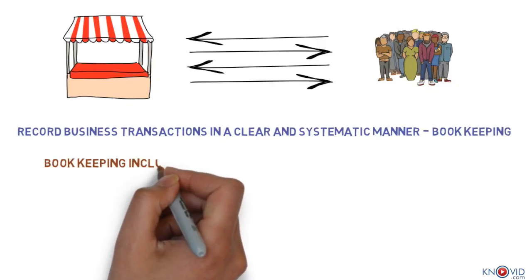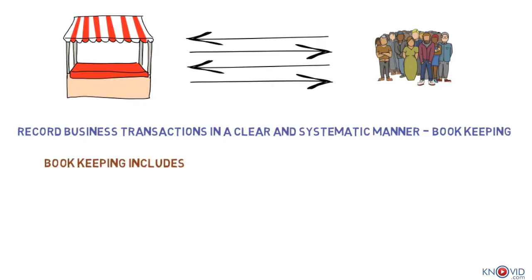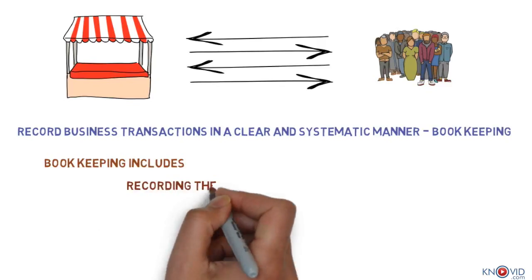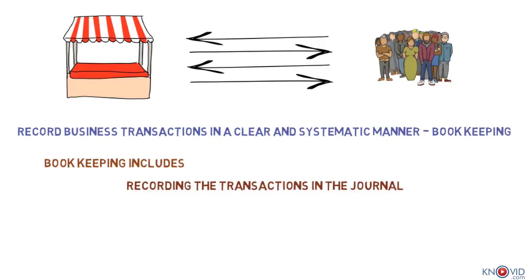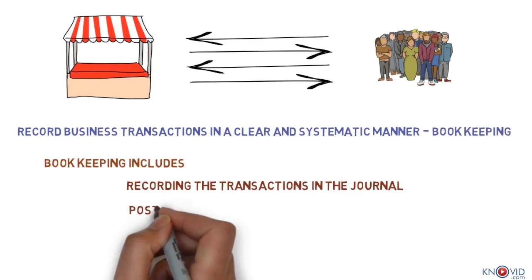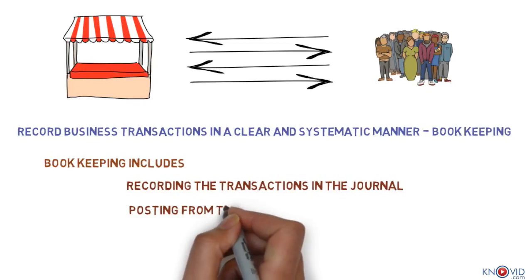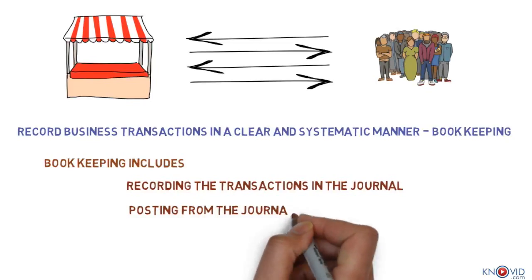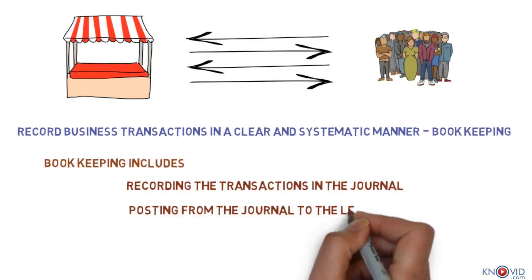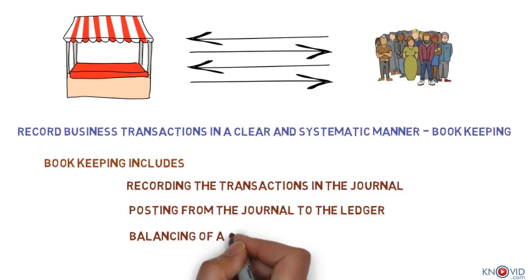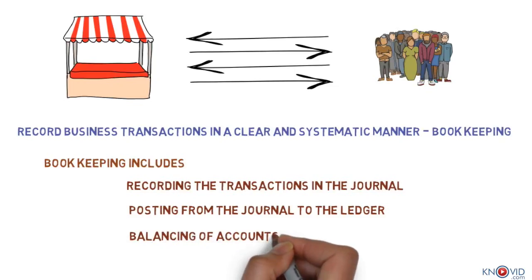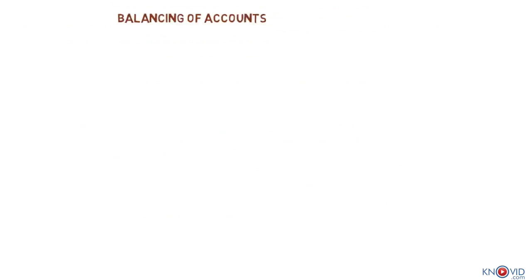Bookkeeping includes: 1. Recording the transactions in the journal. 2. Posting from the journal to the ledger. And 3. Balancing of accounts. We will later see what these terms mean.